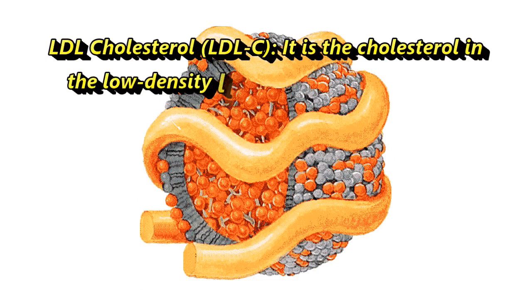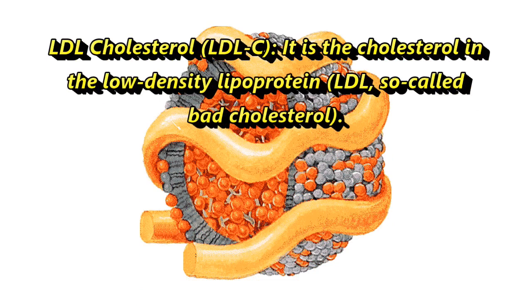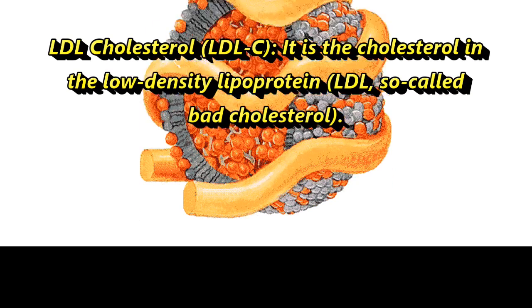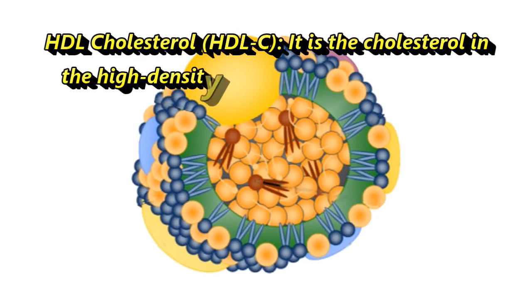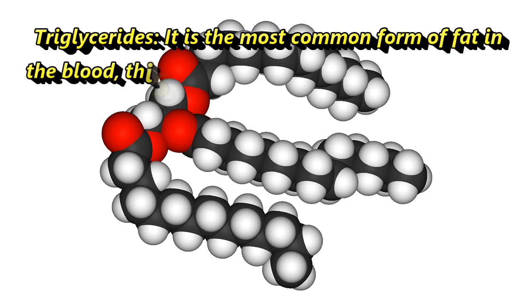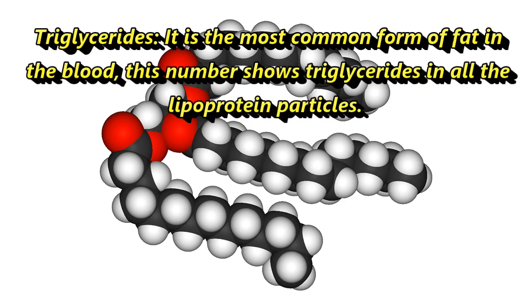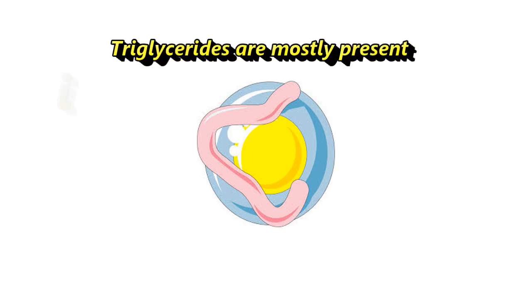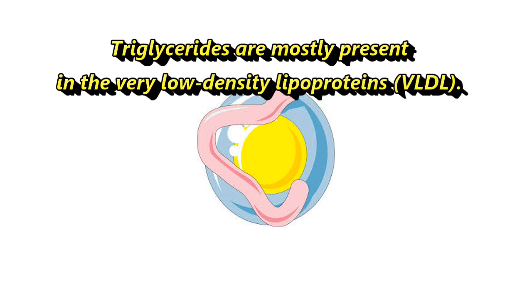LDL cholesterol (LDL-C) is the cholesterol in the low-density lipoprotein, so called bad cholesterol. HDL cholesterol (HDL-C) is the cholesterol in the high-density lipoprotein, so called good cholesterol. Triglycerides are the most common form of fat in the blood; this number shows triglycerides in all lipoprotein particles, and they are mostly present in the very low-density lipoprotein (VLDL).